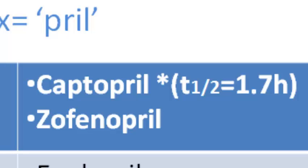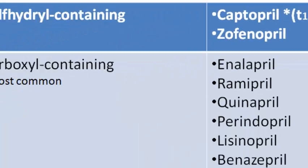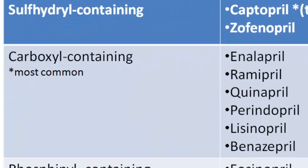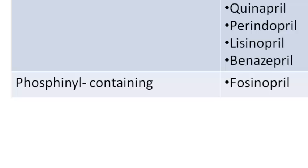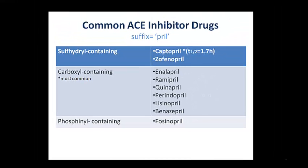Captopril was the first to be synthesized and is unique to other ACE inhibitors due to its short half-life. The majority of ACE inhibitors contain a carboxyl group, while only one approved drug contains a phosphenyl group, namely fascinopril. Most ACE inhibitors are eliminated by the kidneys. For this reason, dose reductions are required in patients with impaired renal function. The majority of ACE inhibitors are prodrugs that become activated once distributed to the liver.